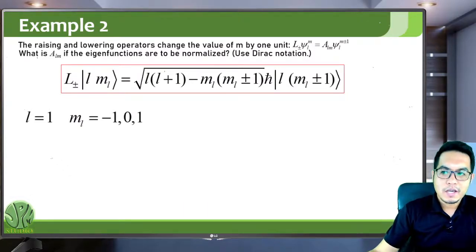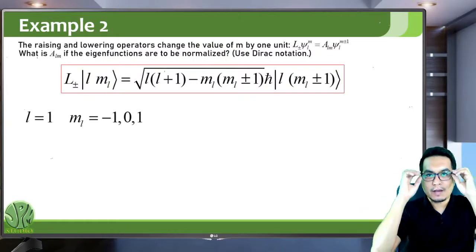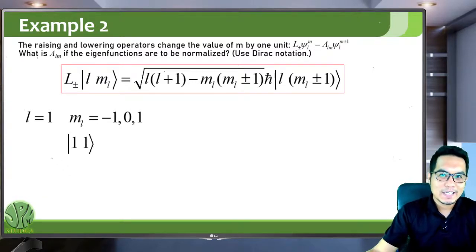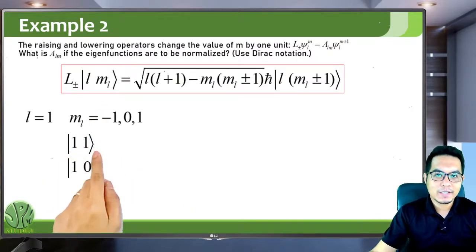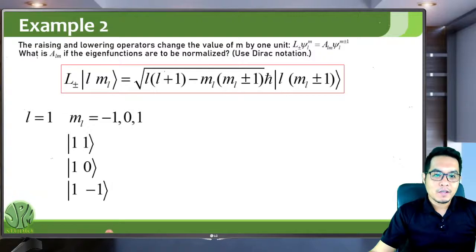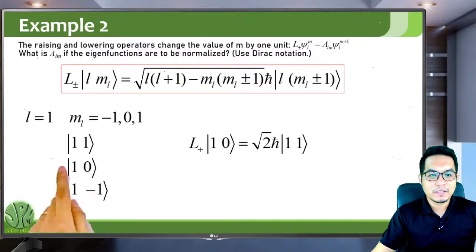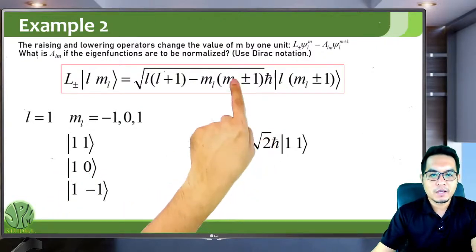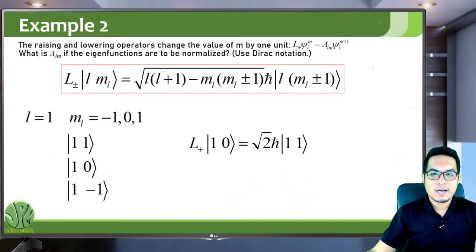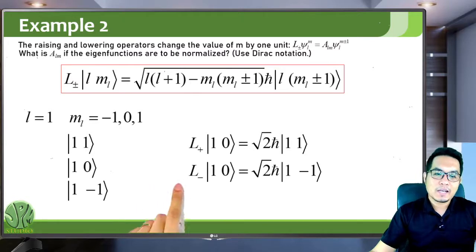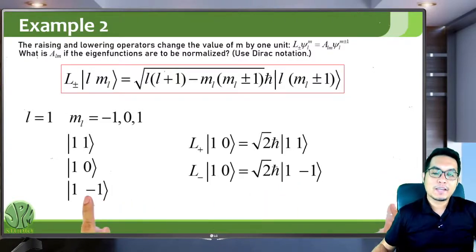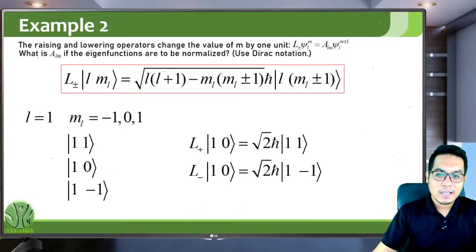As an example, say we have l equal to 1. When l equals 1, the values of ml range from negative l to positive l, so negative 1, 0, and 1. This will have three distinct states: the state |1, 1⟩, the highest state at the top of the ladder; the state |1, 0⟩; and the state |1, −1⟩, the bottom of the ladder. If you apply the raising operator L-plus to the middle state |1, 0⟩ using the formula, you will get square root of 2 times h-bar times |1, 1⟩ — the top of the ladder. Similarly, if you apply the lowering operator to the middle state, you get the lowest state |1, −1⟩. This is a manifestation of the ladder operators.